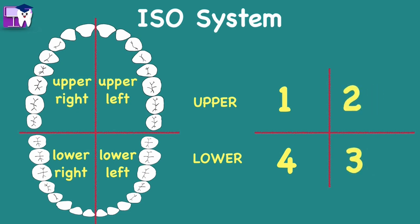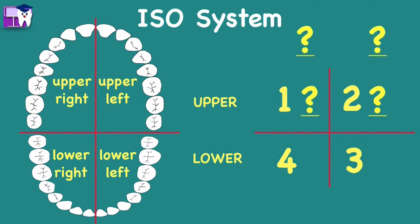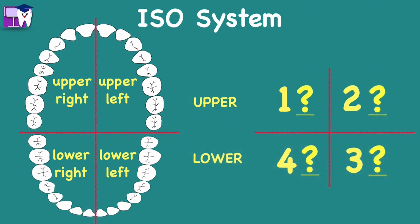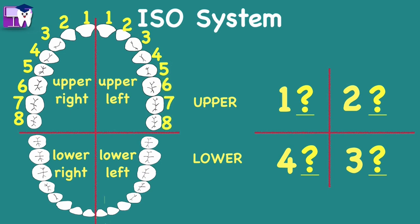Let us now go to the second digit. Remember that the ISO system is a two-digit combination. The second digit indicates the tooth within the quadrant. In every quadrant, the permanent teeth are numbered from 1 to 8, counting starts with the central incisor and ends with the third molar.